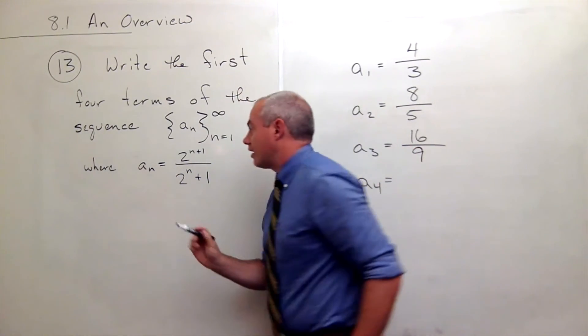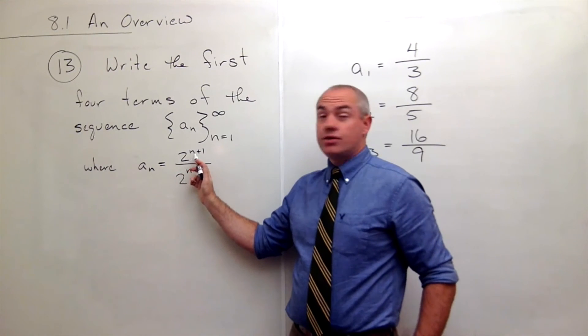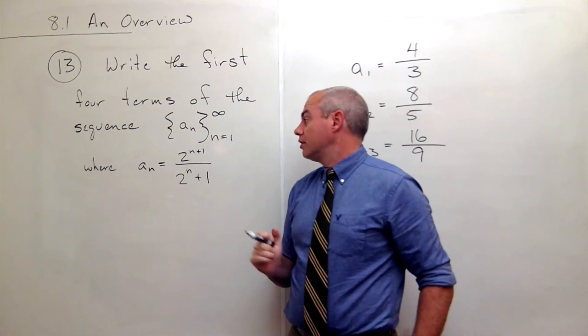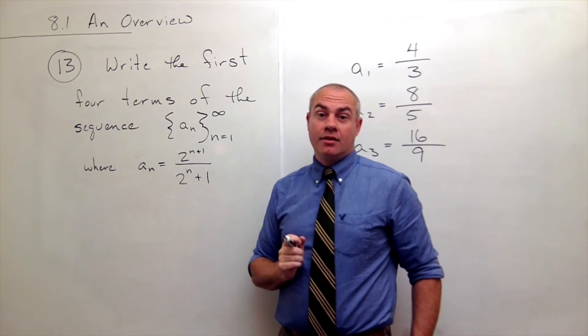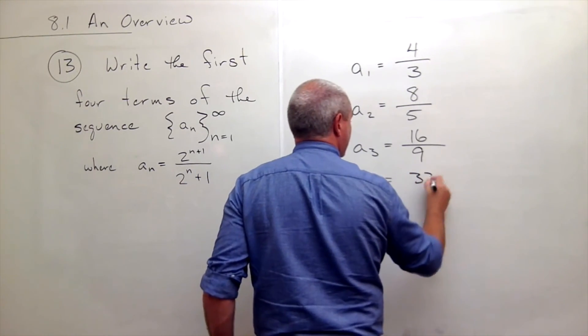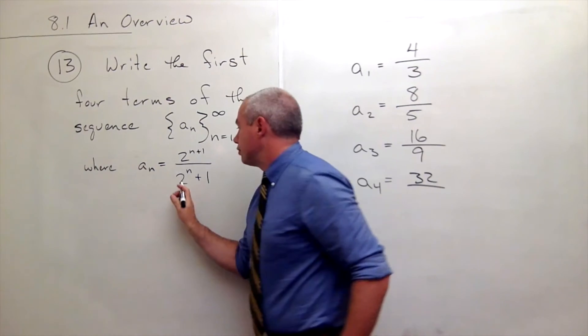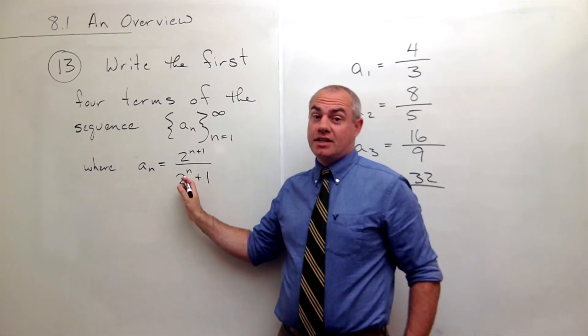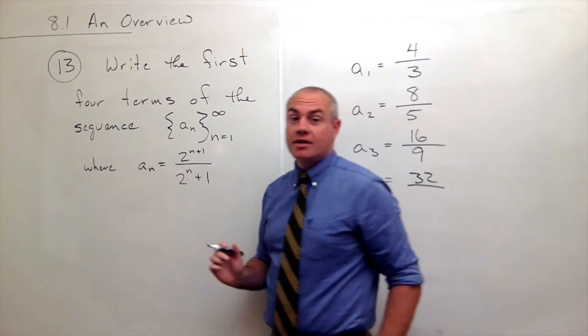Finally, if n is 4, I get 2 to the 4 plus 1, or 2 to the fifth. 2 to the fifth is 32, divided by 2 to the fourth which is 16, plus 1 is 17.